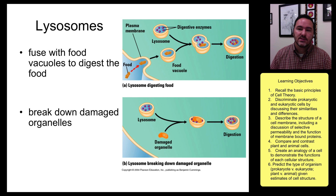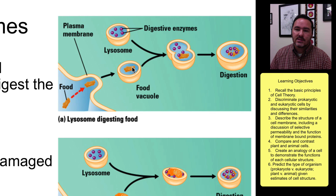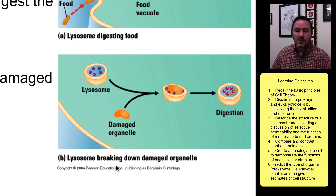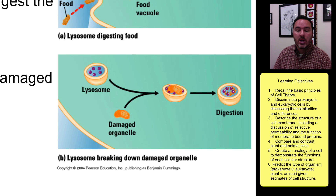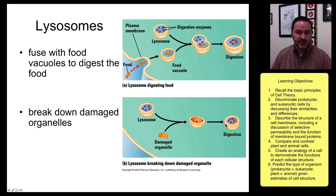Another organelle is called a lysosome. Lysosomes have two main functions. The first is that they help digest food — for example, in an amoeba that brings in a big food particle, a lysosome attaches to the food vacuole and digests the food. Lysosomes can also break down damaged or used organelles. For example, if a mitochondria has been used up and is ready to be recycled, the lysosome binds with it and recycles all of those parts through digestion.